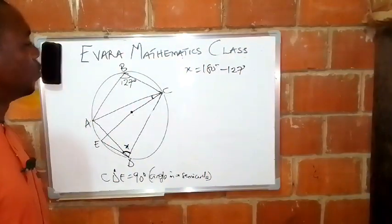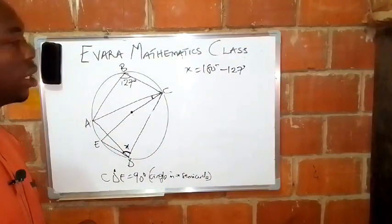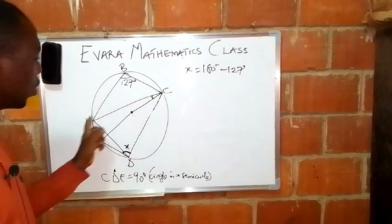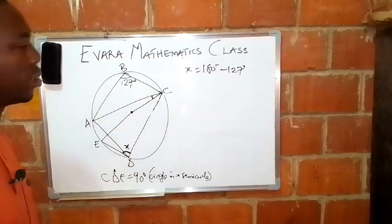Hello everyone at home. We have a cyclic quadrilateral here and we have to get the value of this angle ACE. That is this angle marked here.